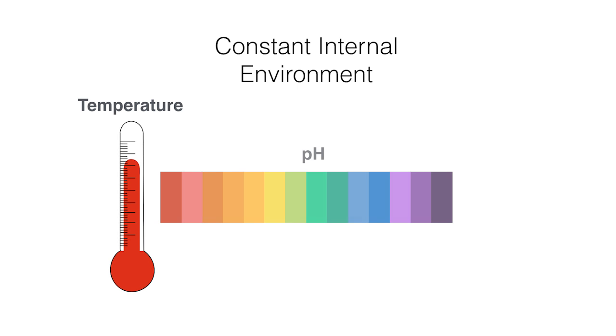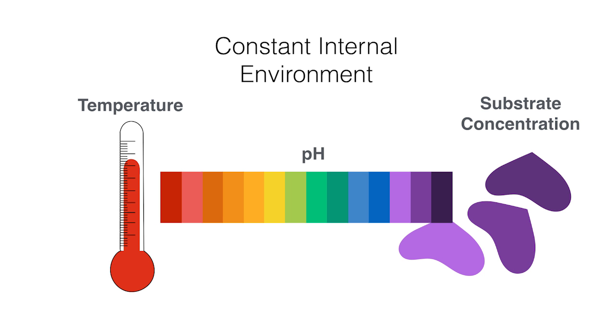After going through all of that, you will probably realize by now that it is important to maintain a constant internal environment, particularly temperature levels, pH levels, and substrate concentration levels, in order to allow enzymes to work efficiently.